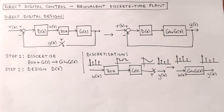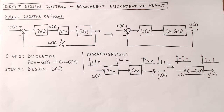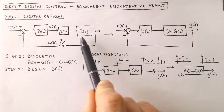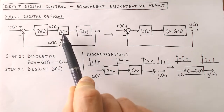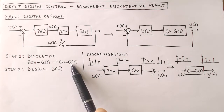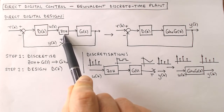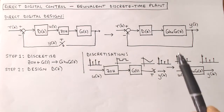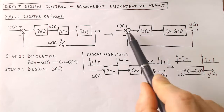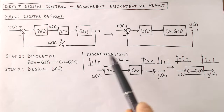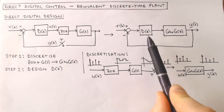The process of direct digital design is illustrated here. This diagram shows the digital control system configuration with the continuous plant and discrete controller separated by a zero-order hold and sampler. The first step is to find an equivalent discrete model for the combination of the zero-order hold, continuous plant, and sampler. This discretized plant model transforms the control system to a purely discrete system, making it possible to perform the second step: designing a discrete controller to control the discretized plant.